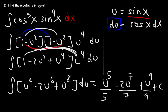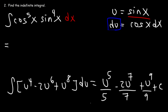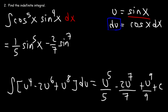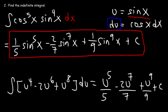We're not finished yet — we need to replace u with sine x. The final answer is (1/5) sine to the fifth power, minus (2/7) sine to the seventh power, plus (1/9) sine to the ninth power, plus C. That's how you find the indefinite integral of a trigonometric integral using u substitution.